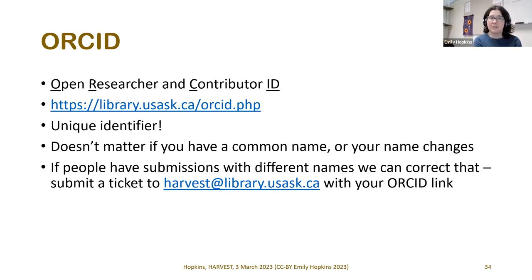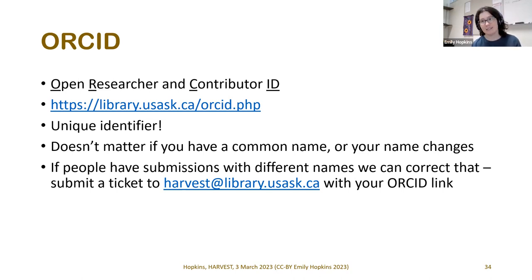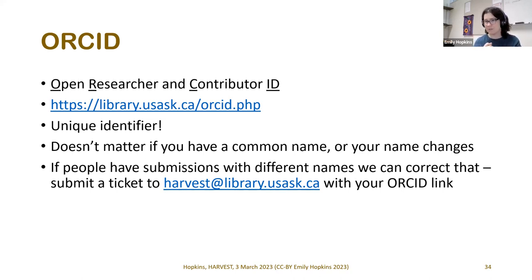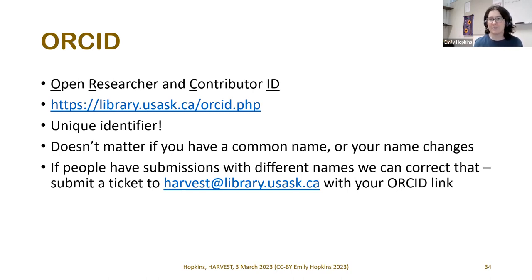ORCID is the Open Researcher and Contributor ID. One of its really important uses in Harvest is as a unique identifier for you. If your name is common, if your name changes, or if you go by different names, you can track that with your ORCID profile — all we need is the identifier that points to it. This ensures all your work shows up under one author in Harvest and that you have control over your name. If there's some drift in past submissions — some with ORCID and some without — you can submit a ticket with your ORCID link and we can get that sorted out.